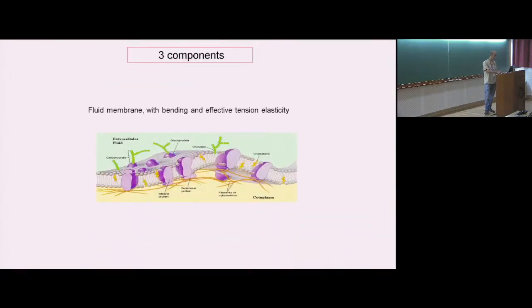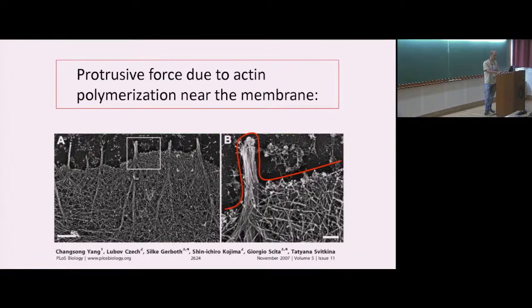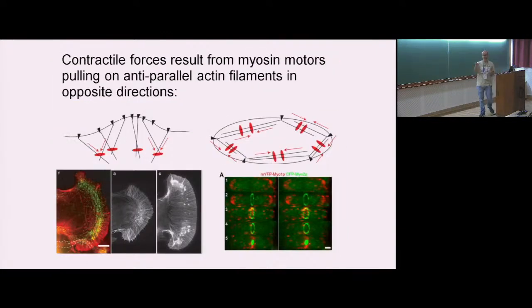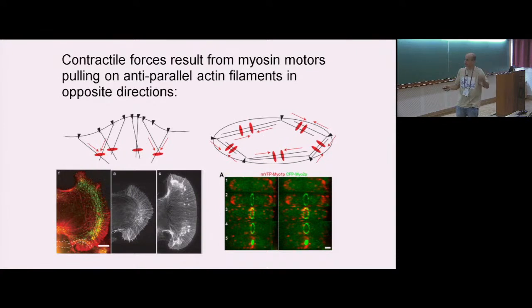The first component is active actin polymerization, which pushes outwards by adding new monomers to growing ends that push the membrane. This also provides effective friction from the viscous cytoplasmic network below, supporting the protrusion like a skyscraper. Contractile forces can also arise: even in the disorganized actin network at a cell's leading edge, myosin represented by red ovals can grab two actin filaments and contract them inwards, opposing the protrusive actin force.